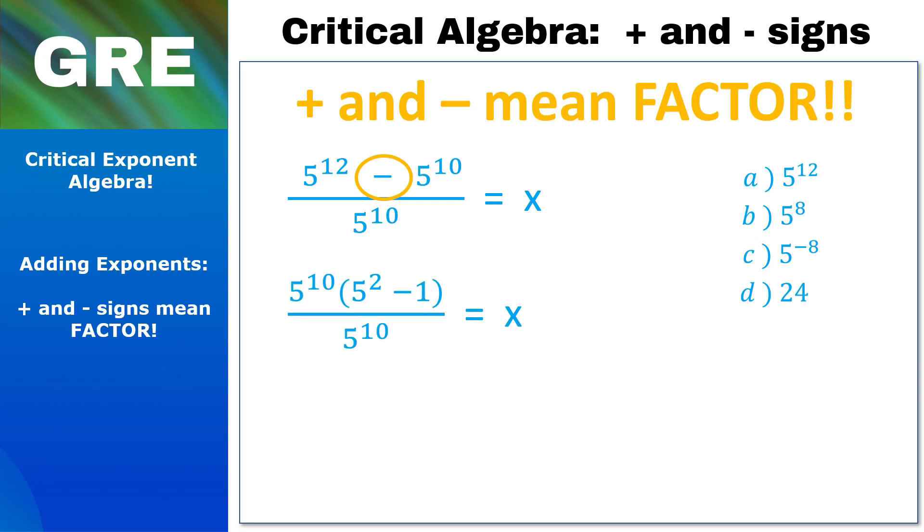And just like magic, the 5¹⁰ in the numerator no longer has a plus or minus sign attached to it. It's being multiplied, and we love multiplication because we can cross off things that are multiplied. So let's cross off the 5¹⁰ on the top and the bottom. We do a little bit of arithmetic and we find that this is in fact the dumbest way ever to write 24.